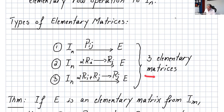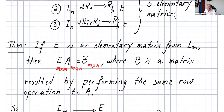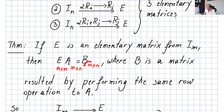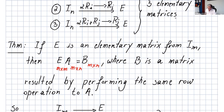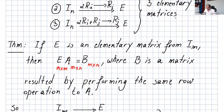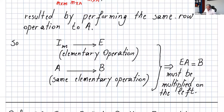There is an important theorem: if E is an elementary matrix derived from I_m, then the product E times A — where E is m×m and A is m×n — gives a matrix B that is m×n, where B is the result of performing that same row operation to A. Let's go over an example to see this clearly.